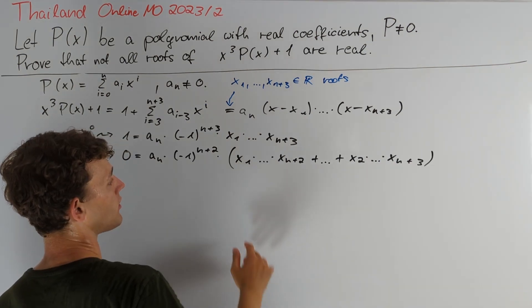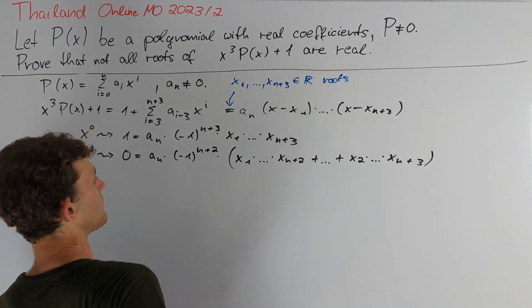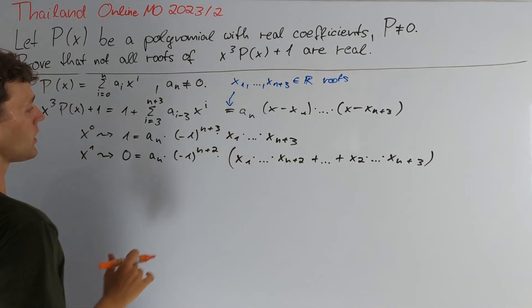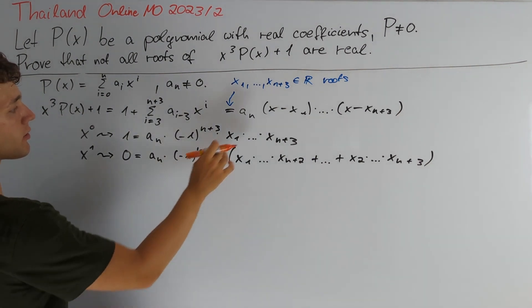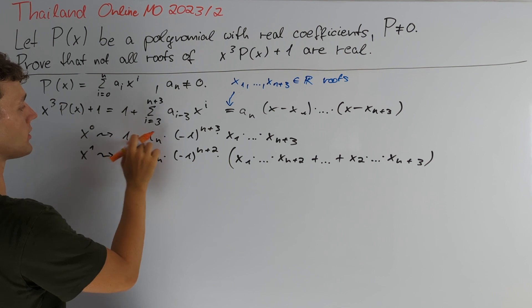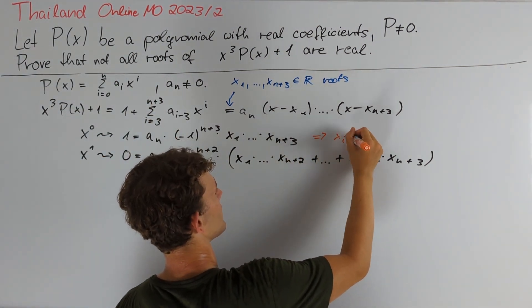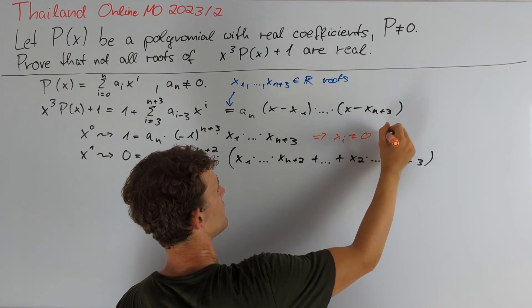It would be nice to factor out the product of all xᵢ out of that sum. But if we take a look at our first equation, we notice that it tells us that all of the xᵢ can't be equal to 0, because otherwise we would have 1 equal to 0. So we get xᵢ is not equal to 0 for all i.